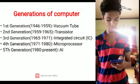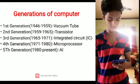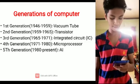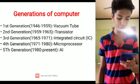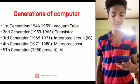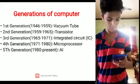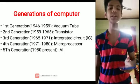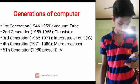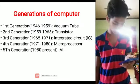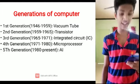There are five generations of computers: 1st Generation (1946–1959): Vacuum Tubes. 2nd Generation (1959–1965): Transistors. 3rd Generation (1965–1971): Integrated Circuits (IC). 4th Generation (1971–1980): Microprocessors. 5th Generation (1980–present): Artificial Intelligence (AI).